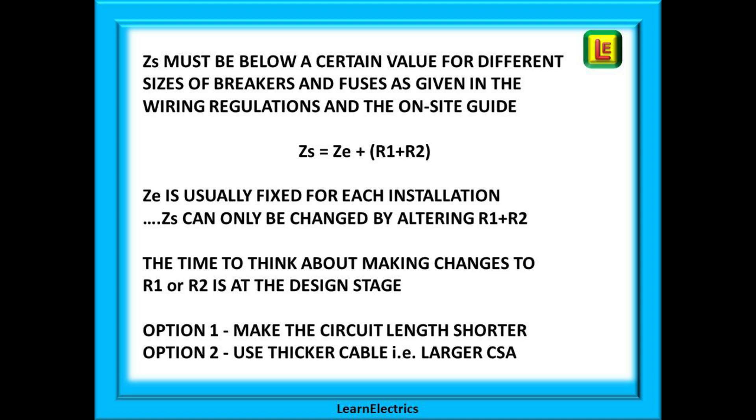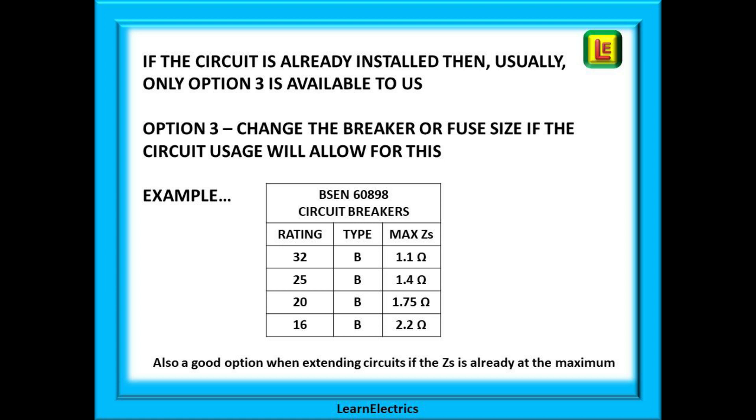Option one is to make the circuit shorter, but this is not always possible. If the water heater is upstairs that is where it is staying. Option two is to use thicker cables, a larger cross sectional area. This is usually the option that is taken up at the design stage. But remember copper cable is expensive so we don't want to make the size of the cable too big. If the circuit is already installed, already plastered in place and decorated, then we only really have option three as a choice. If the ZS is too high for the breaker size and we cannot change the cable, then why not change the breaker size to match the ZS. We can choose a breaker whose ZS is above the R1 plus R2 resistance that we have just measured.